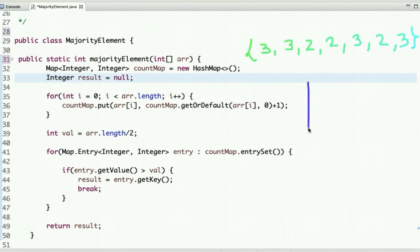If you visualize, let's draw a simple table partitioned into two parts. The first part represents the key and the second part is the value. The key is always unique in a HashMap. So the keys are 3 and 2. 3 occurs 4 times and 2 occurs 3 times.